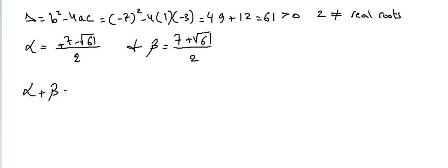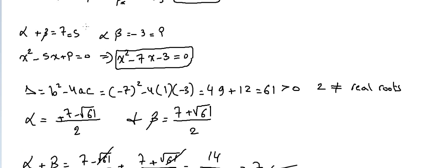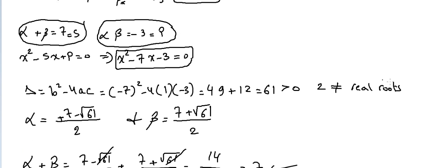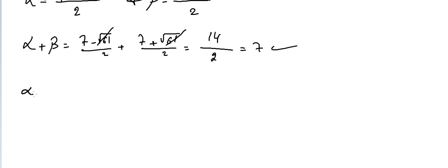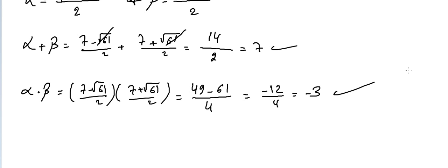To verify: adding alpha and beta — (seven minus radical sixty-one over two) plus (seven plus radical sixty-one over two) — the radicals cancel and we get fourteen over two, which is seven. Correct! Multiplying them gives (seven minus radical sixty-one)(seven plus radical sixty-one) over four, which is forty-nine minus sixty-one over four, giving minus twelve over four, which is minus three. Both verified.